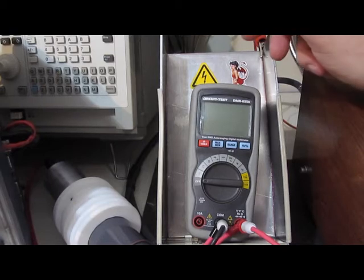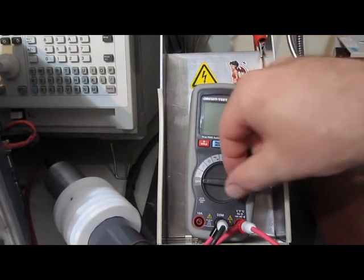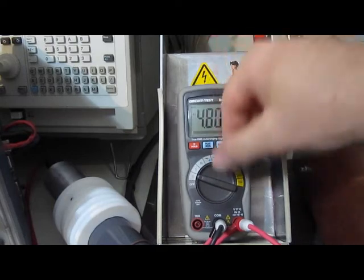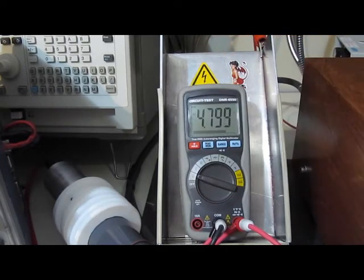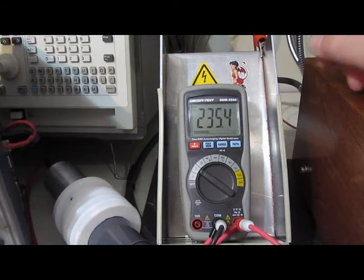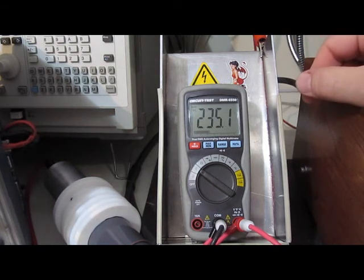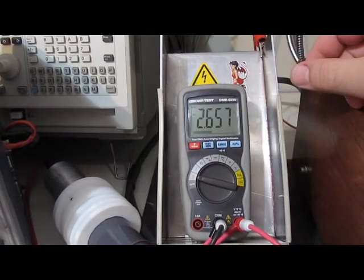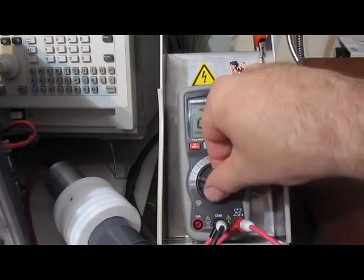Okay, here we have the Circuit Test DMR 6550. This meter took quite a bit of damage at the last run, 5000 volts, and you can see it still reads DC volts just fine. It's got a bit of an offset to it, but you know, really not that bad.